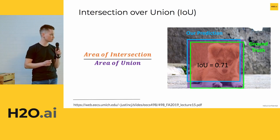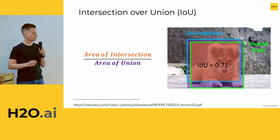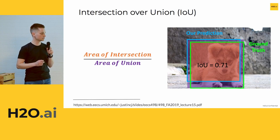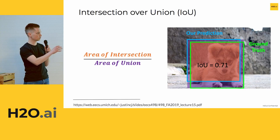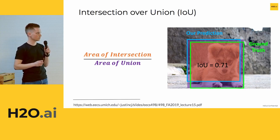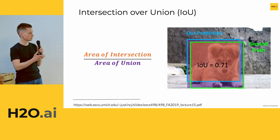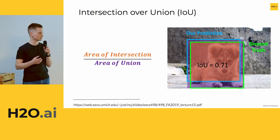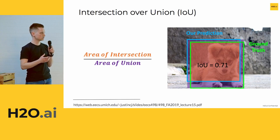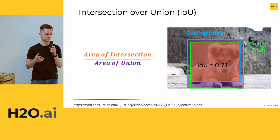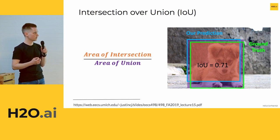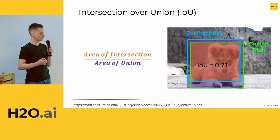First, we need to know what Intersection over Union (IOU) is — the major metric used to evaluate the quality of detected boxes. In the image you can see a green ground truth box around the dog and a blue prediction somewhere around the dog. This metric takes the area of intersection of the two boxes and divides it by the area of their union. The better we match the boxes, the closer this metric is to one. In this example the metric is 0.71.